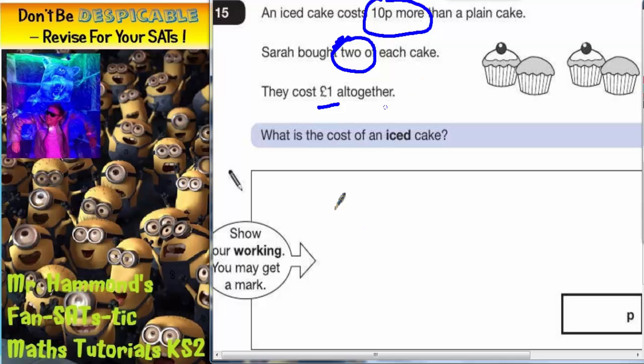She's buying two of each cake. So she's got a plain cake, another plain cake, an iced cake, and an iced cake. We can't go over a pound.